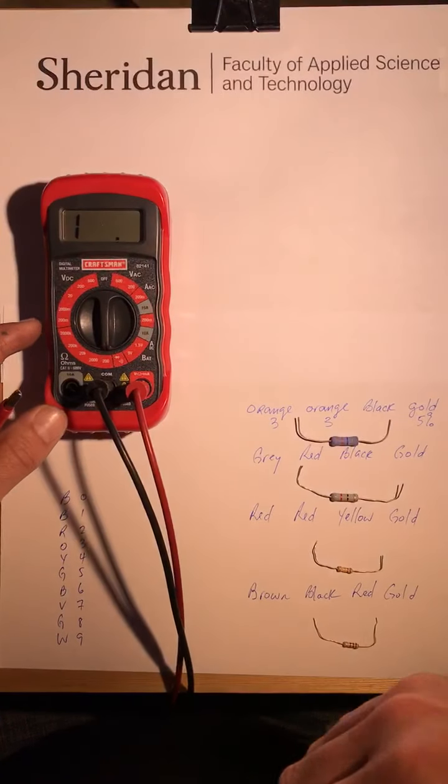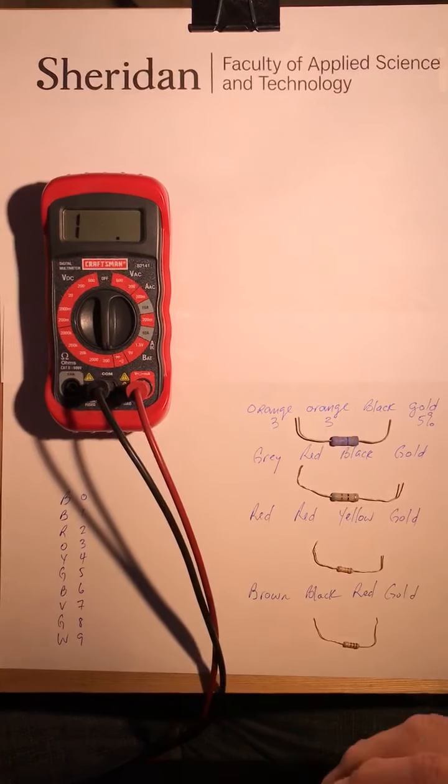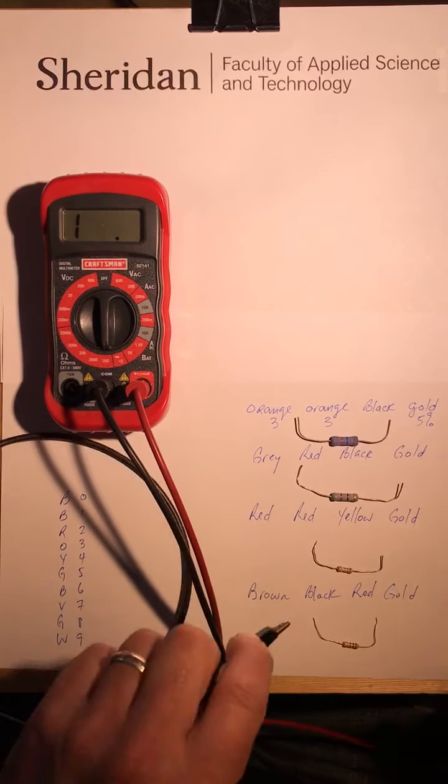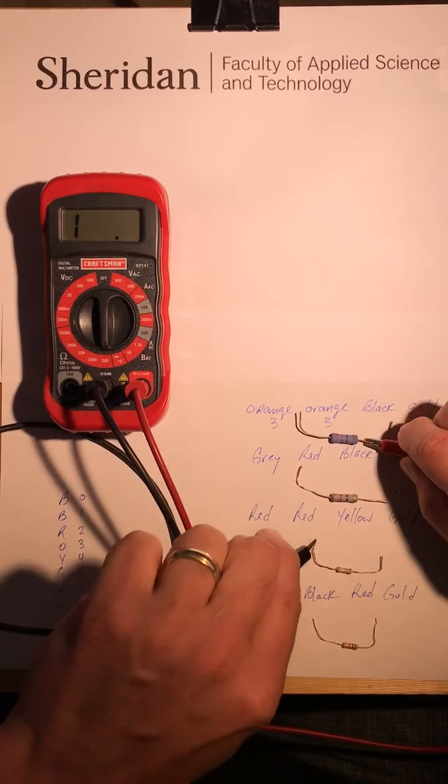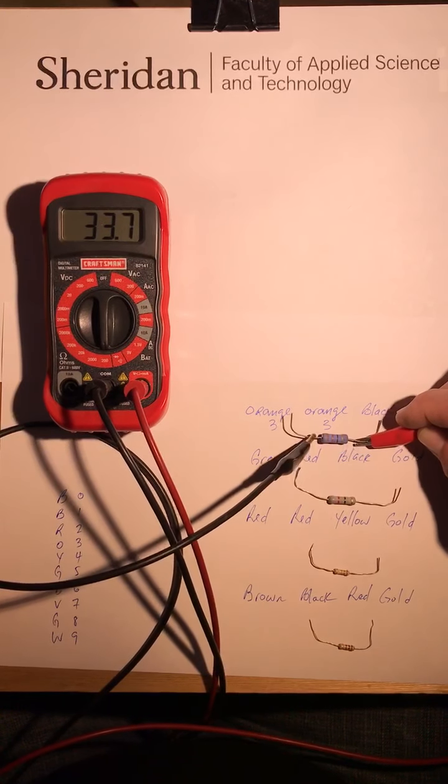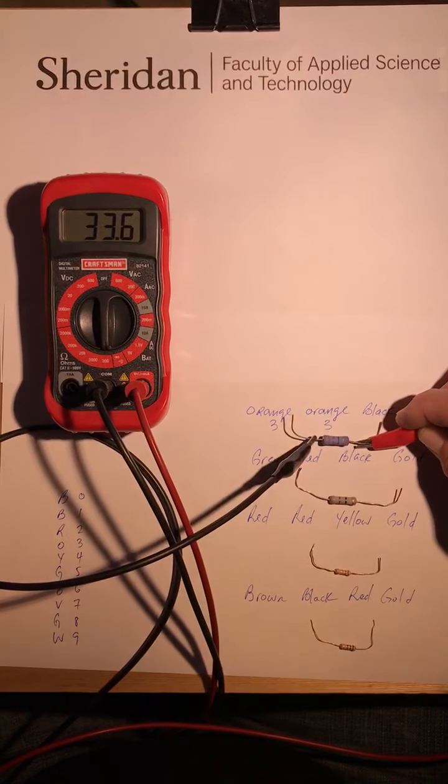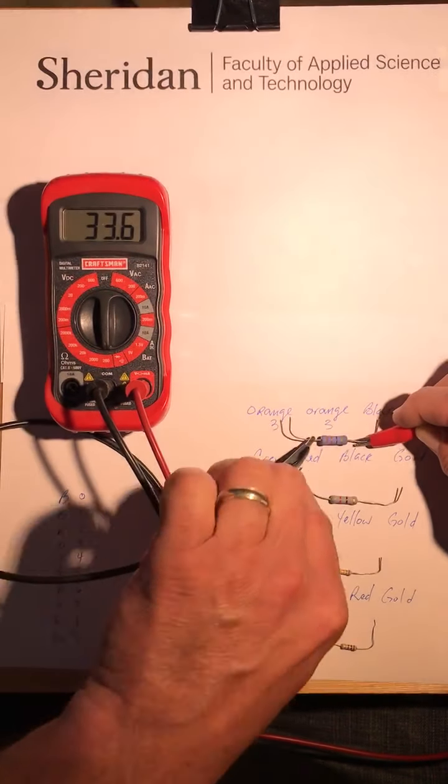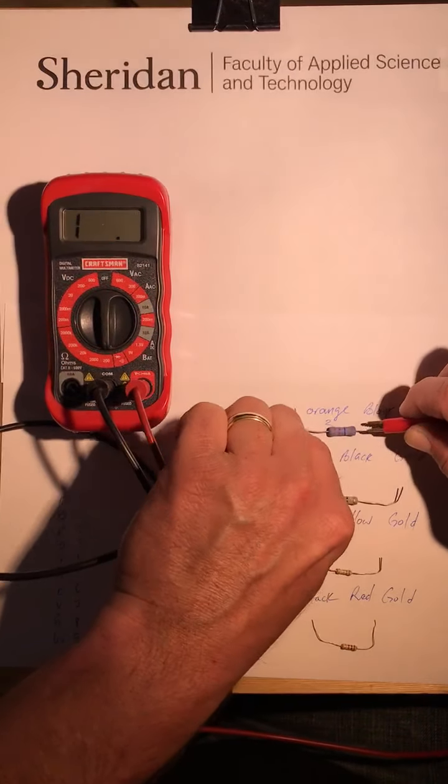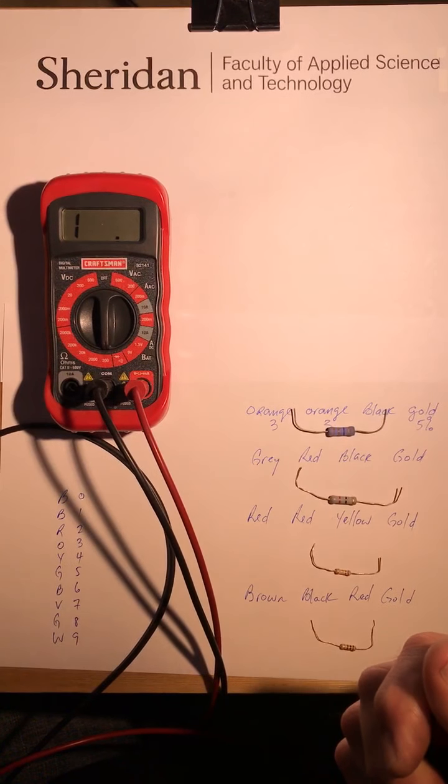So if I take a look at this one here, I put that across there and there. I'm supposed to be within five percent of 33, so we're good - it's showing up as 33.6. Notice how I keep my fingers off of it, because if I add my fingers to it, then I'm gonna add a value of resistance - my own resistance - so I don't want to do that.